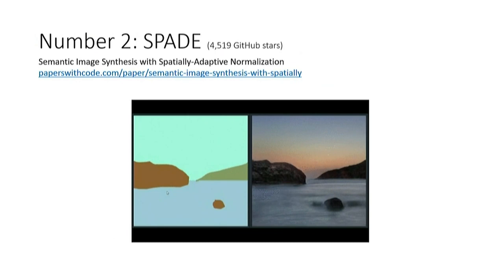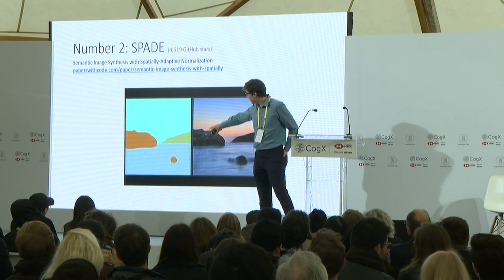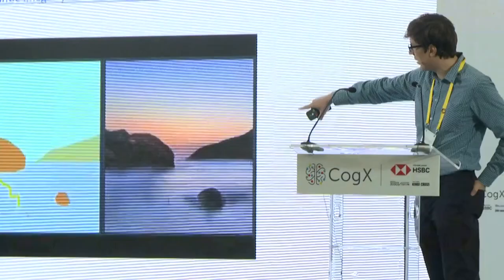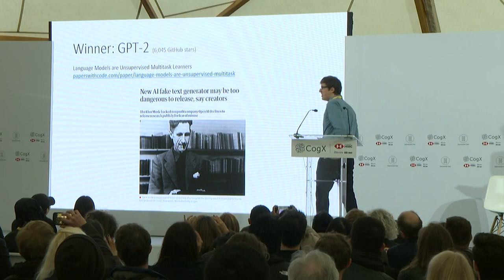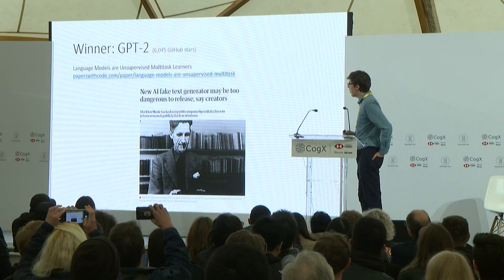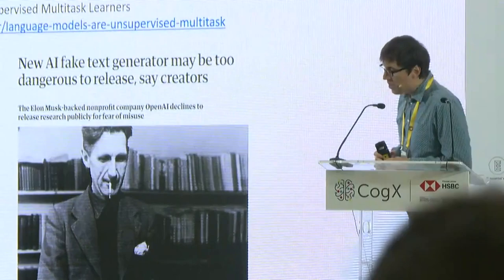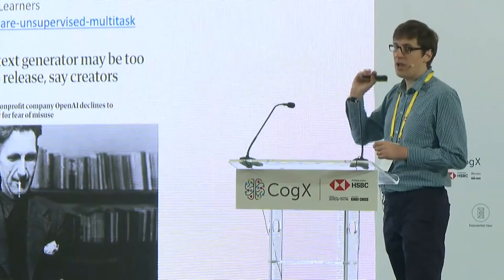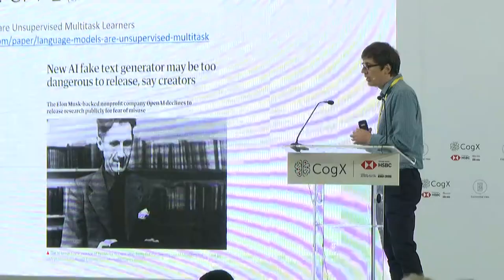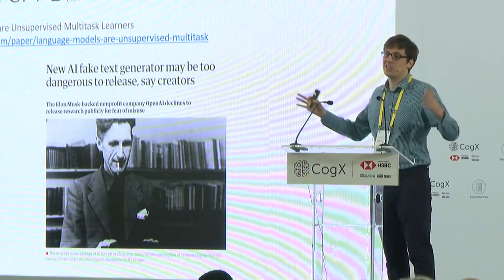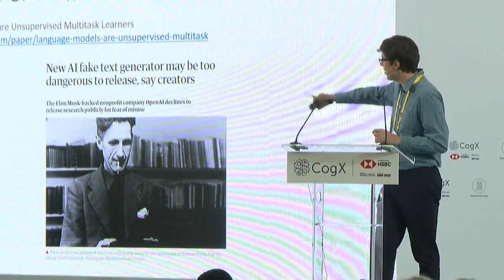For number two, you can draw a sketch of the type of thing you want synthesized, and then the GAN is essentially going to take your sketch — here there was no shore, we drew a shore, and then it in-paints a shore there. Four and a half thousand stars on GitHub. So what's going to be number one? Not GANs. Something even more dangerous, and that's GPT-2. This is a work from OpenAI. Six thousand stars. Made it to the Guardian as well. So the code for this is actually available — you can get the code and play around with it. The smaller models are also available.